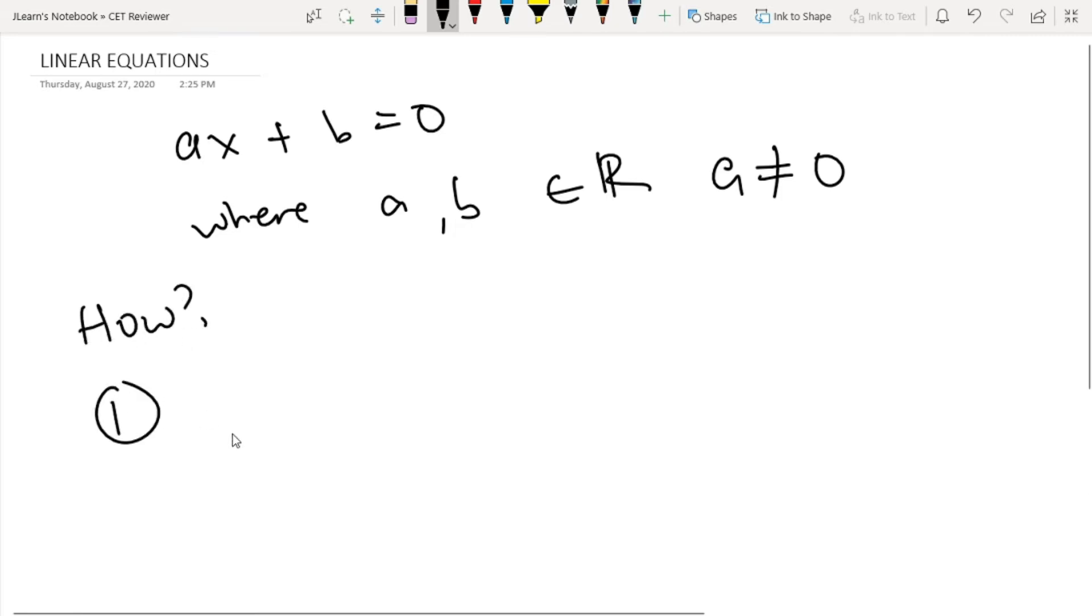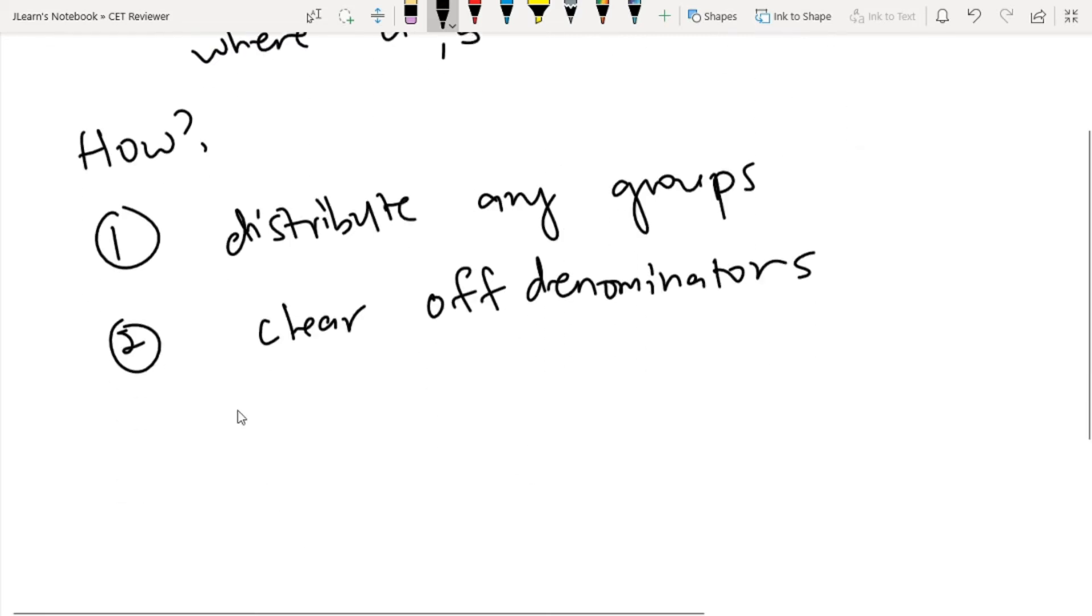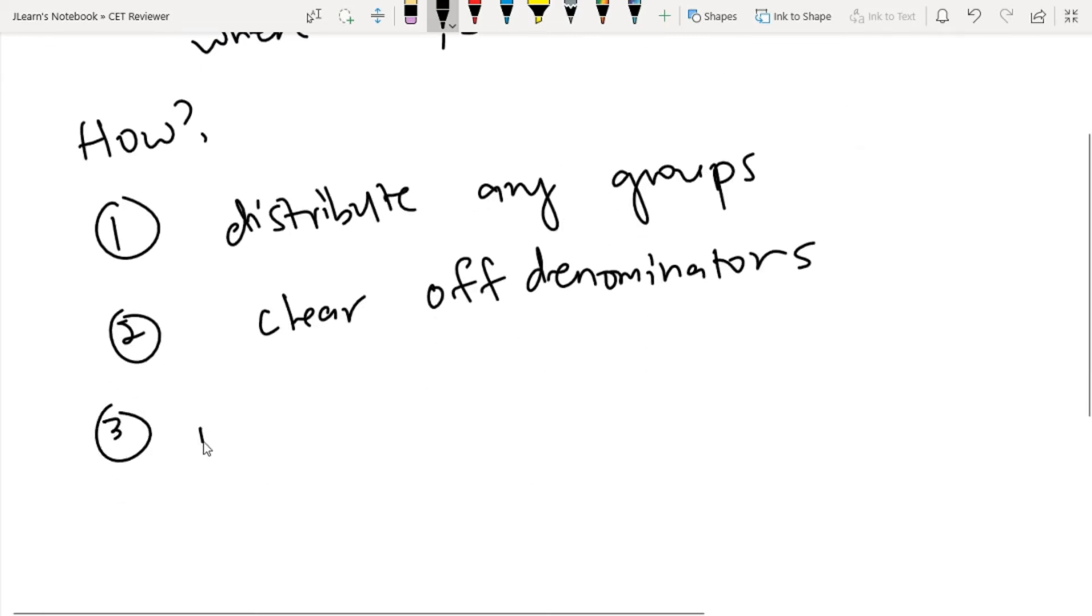First is we distribute any groups if there are any. Second, if there are denominators, we clear off denominators. Third is we isolate all variables and constants.